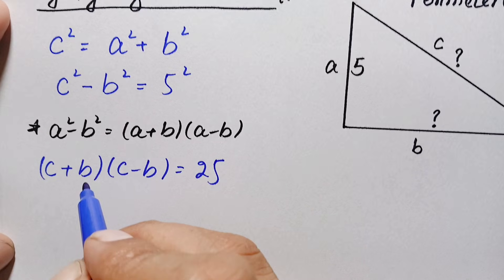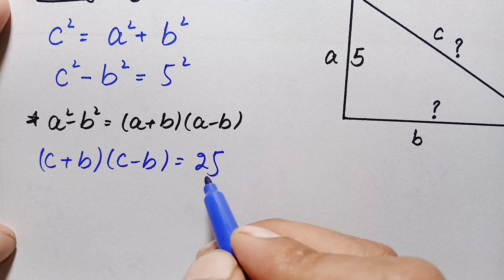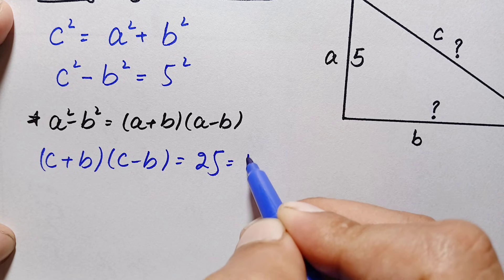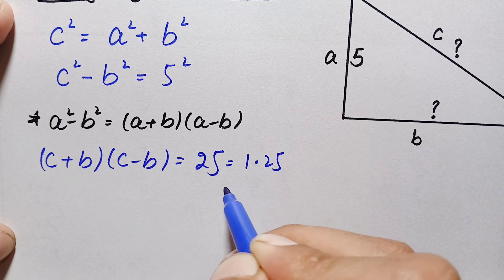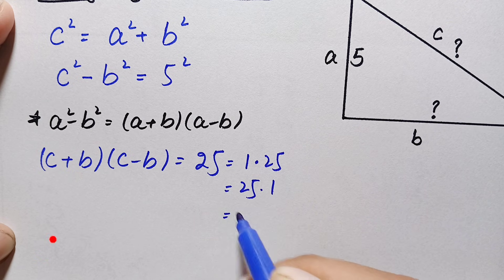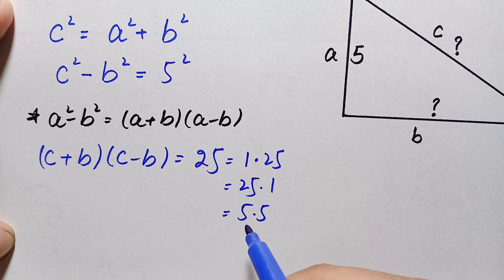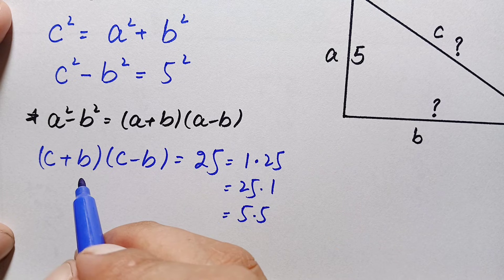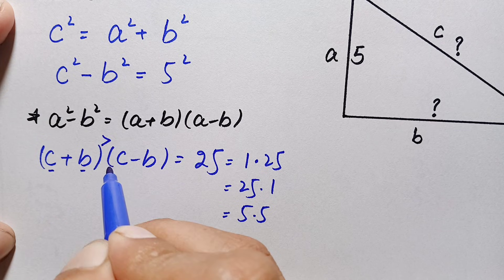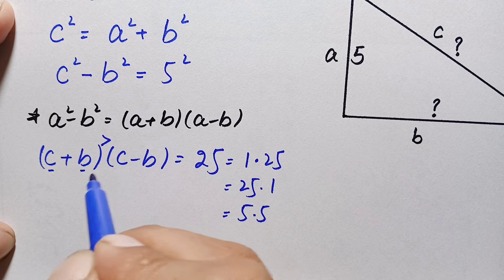On the left hand side we have the product of two expressions, so we will factorize 25 into its factors. The possible factors of 25 are: 1 × 25, 25 × 1, and 5 × 5. For any two numbers c and b, their sum will always be greater than their difference, so we will take only the factor pair that matches this condition on the left hand side.